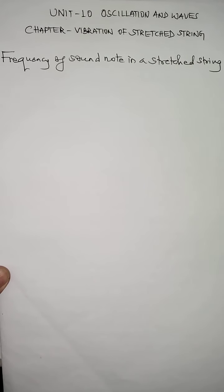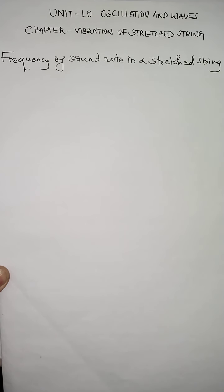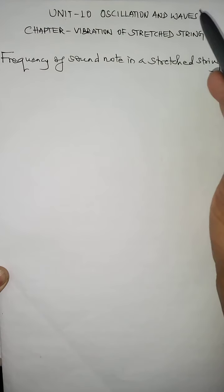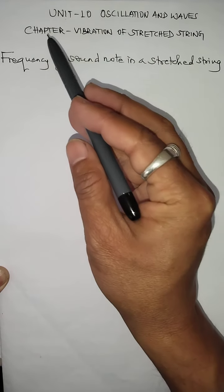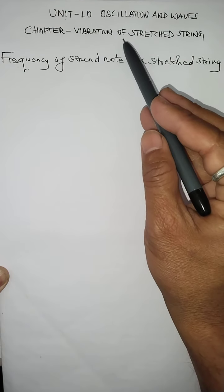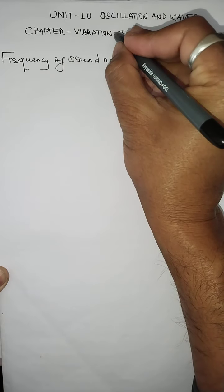Hello, dear children of class 11 science. Today I welcome you all through this YouTube mode of teaching. Today we start a new chapter under unit number 10, and we do this chapter as the last chapter for class 11. It is a very short chapter under unit number 10 — oscillation and waves — and the chapter name is vibrations.